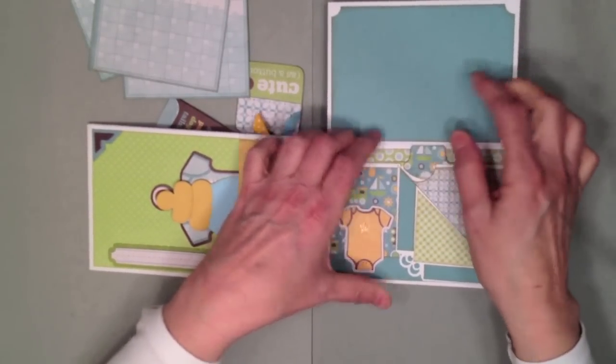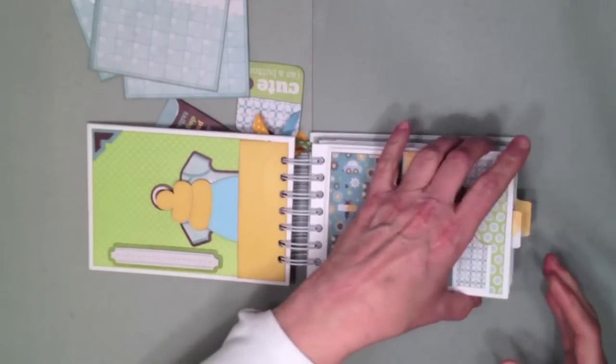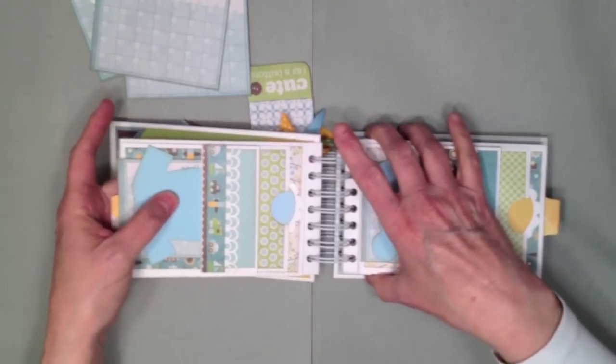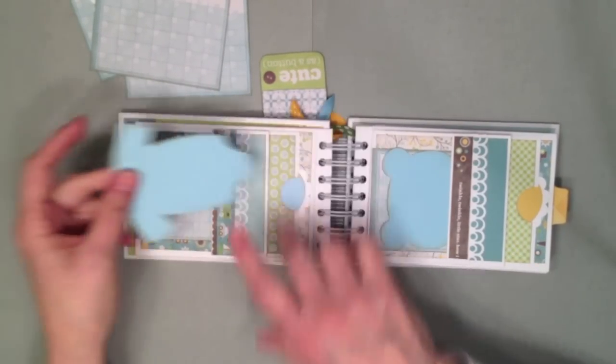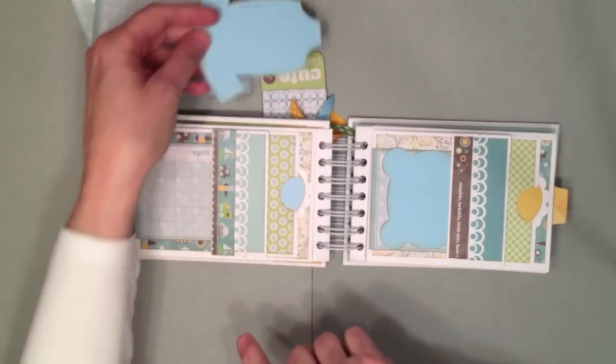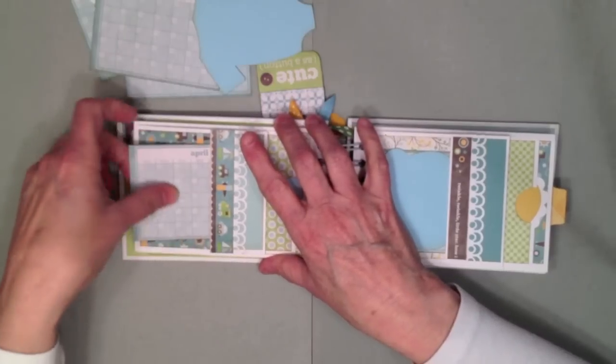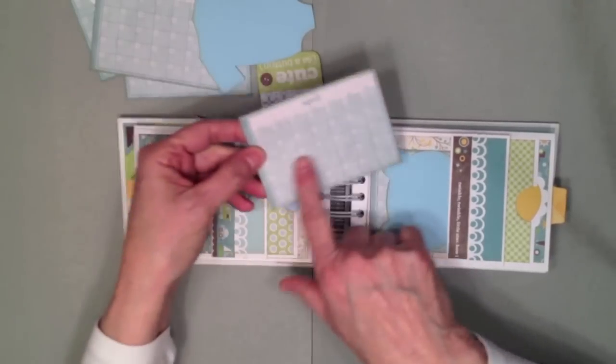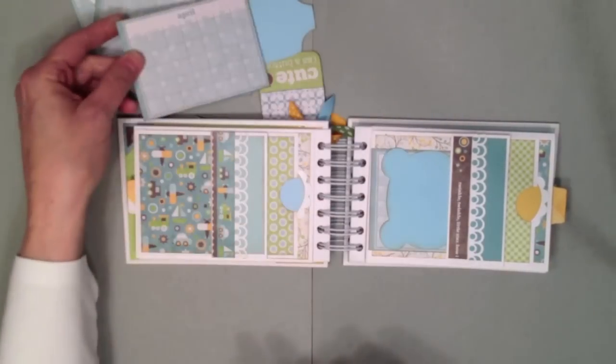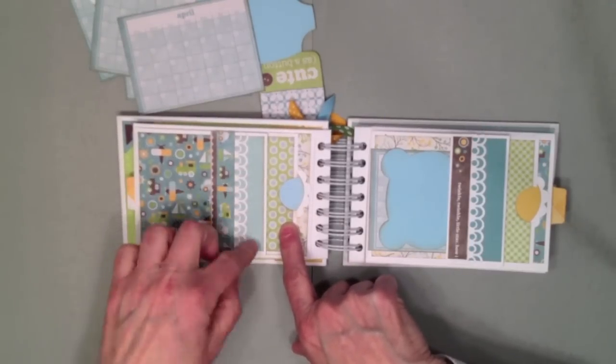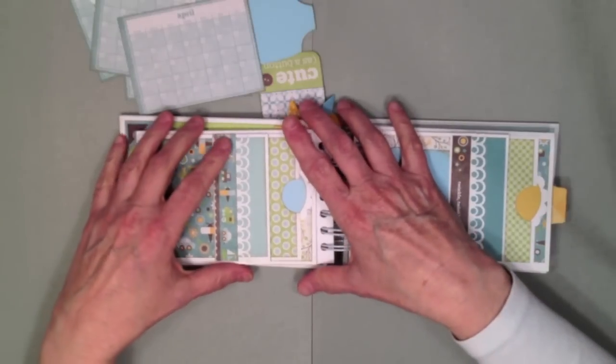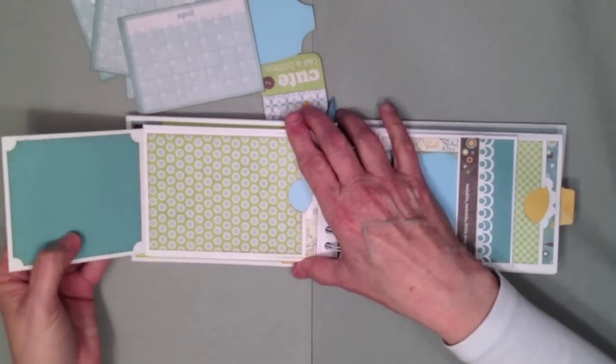You also get another pocket back here in the very back, a place for another photo. So that just goes in there. So that's just the front of the first page. Then you flip it over on the opposite side, you have the same thing. I have a little die cut of a onesie that I cut from my Cricut. Here's the month of April's calendar here and a photo opportunity on the back.